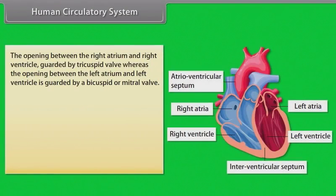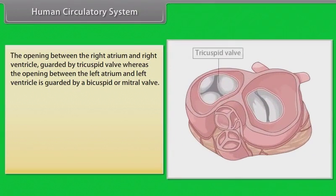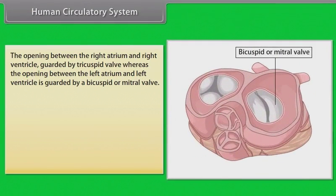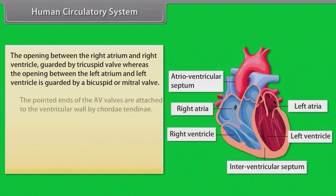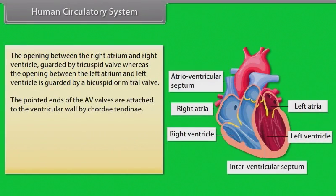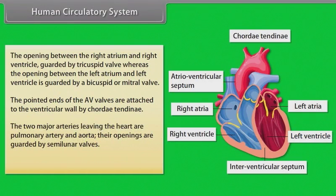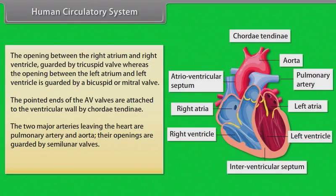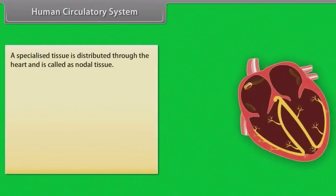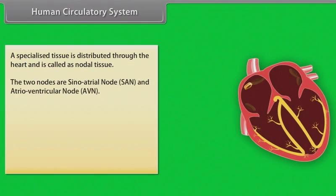The opening between the right atrium and right ventricle is guarded by the tricuspid valve, whereas the opening between the left atrium and left ventricle is guarded by the bicuspid or mitral valve. The two major arteries leaving the heart — pulmonary artery and aorta — have their openings guarded by semilunar valves. The wall of the heart is made up of cardiac muscles, and a specialized nodal tissue is distributed throughout the heart.